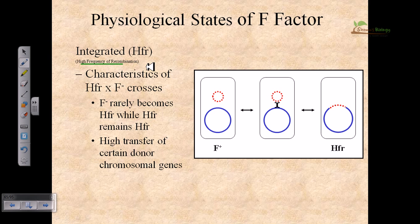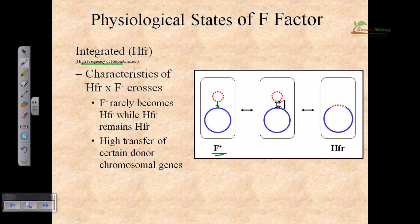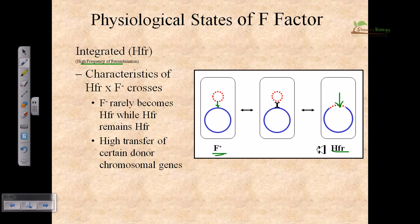The second type is the HFR factor, also called the high frequency of recombination factor. This HFR factor is formed from the F plus factor. In F plus, the cell has an F factor, but now this plasmid DNA becomes integrated into the chromosomal DNA through a crossing-over or recombination event. After integration, a large chromosome is formed containing all the structural genes of the bacterial cell along with the plasmid DNA. We call this type of bacterial cell the HFR strain — high frequency recombination.